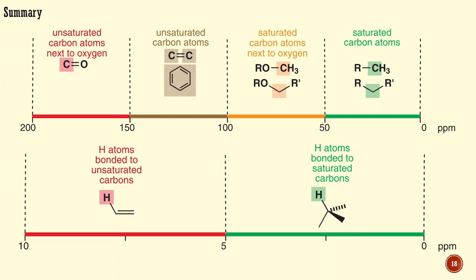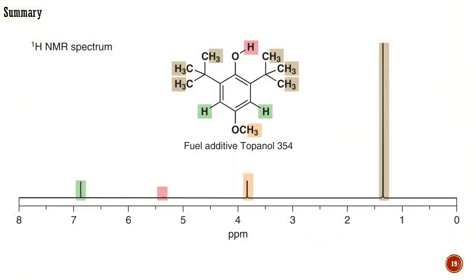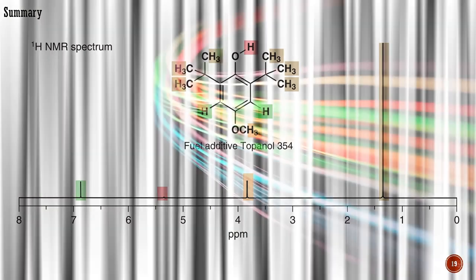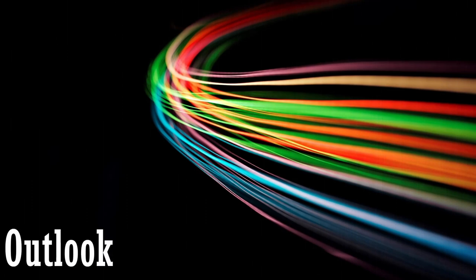To summarize: in this lecture, we learned about the regions where typical functional groups appear in carbon and proton NMR spectra. Using specific examples, you saw how this information can be used for the determination of the structure of organic molecules. The following lecture will introduce the basic principles of infrared spectroscopy and its use in identifying common functional groups in organic compounds.